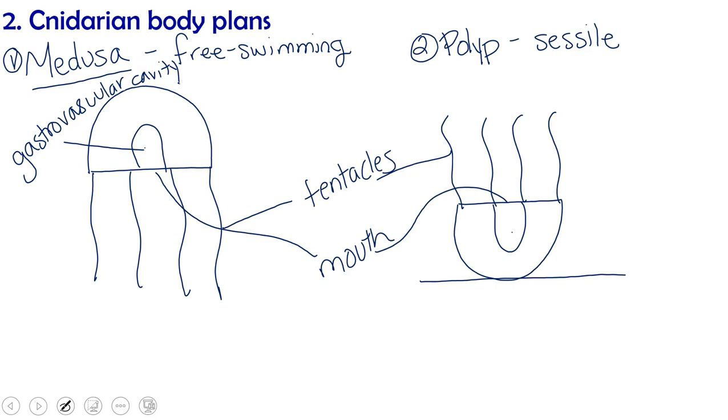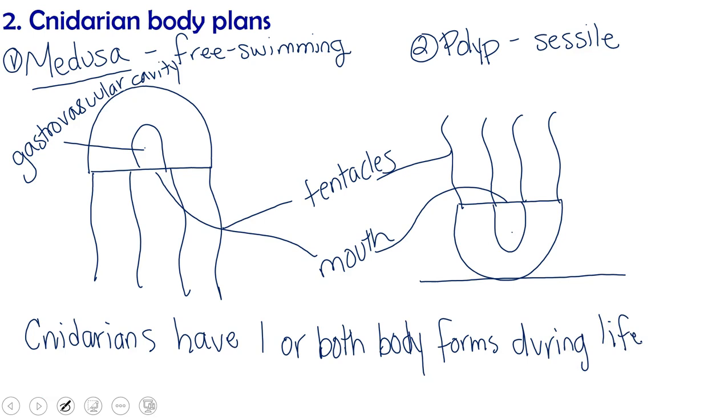So cnidarians, all cnidarians, have one or both of these body forms during their lifetime. There are some and we'll take a look at this that can actually alternate between medusa and polyp depending what point in their life they're at.